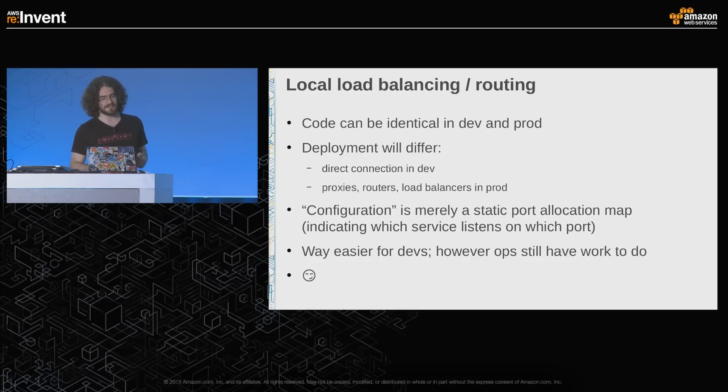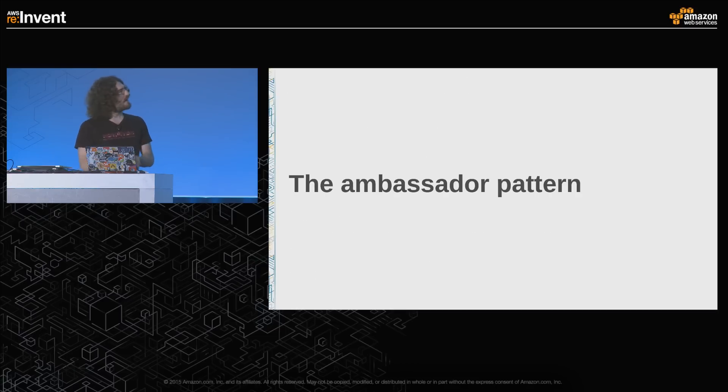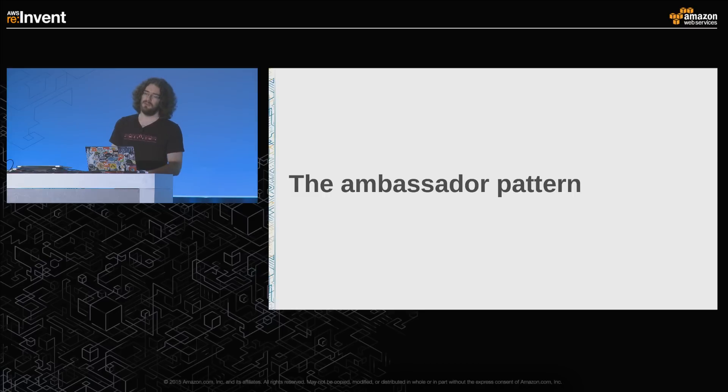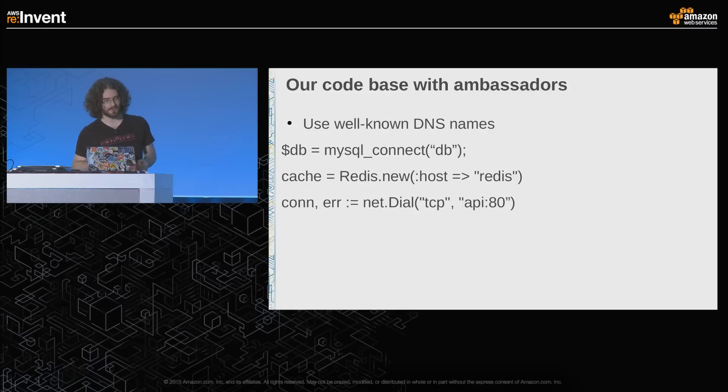Some people had interesting ideas — for instance, Airbnb's SmartStack — where everything runs on localhost. When you want to connect to MySQL, you connect to port 3306. When you want to connect to Redis, you connect to port 6379. In dev, you run everything locally. In production, you put proxies or relays so that connecting to port 3306 routes your connection to the actual MySQL server. The code is the same in dev and prod, and you don't need a complicated Zookeeper or etcd cluster just on your dev environment.